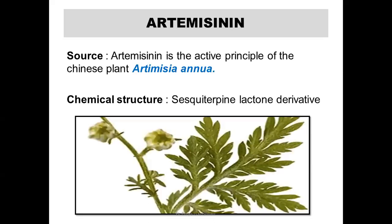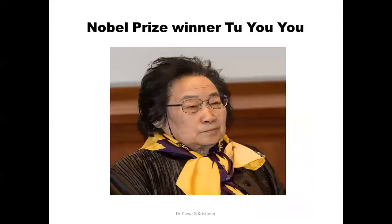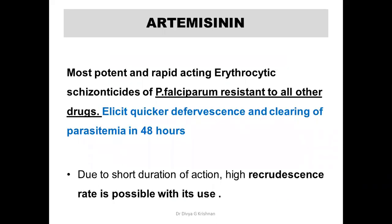Artemisinin is derived from the active principle of the Chinese plant called Artemisia annua. Chemically it is a sesquiterpene lactone derivative, as you have already seen in the chemical classification of anti-malarial drugs. This is the image of the Nobel Prize awarded to Tu Youyou, who won a Nobel Prize for her discovery of artemisinin.